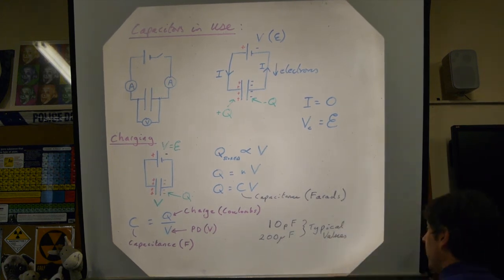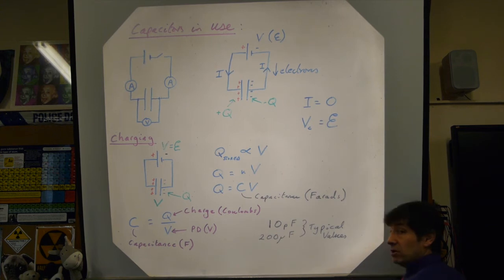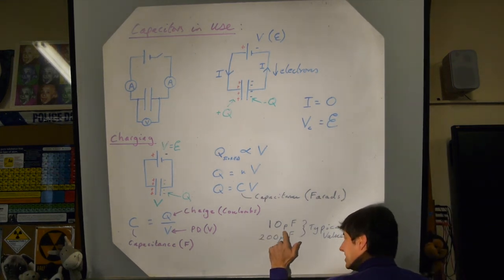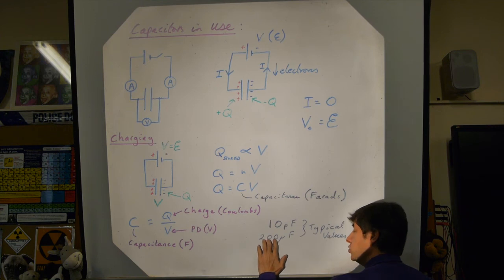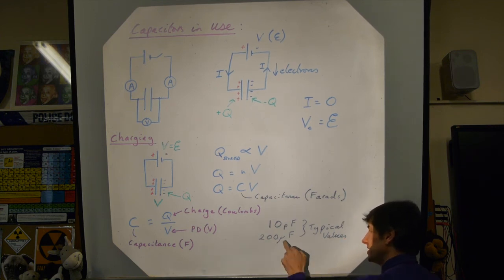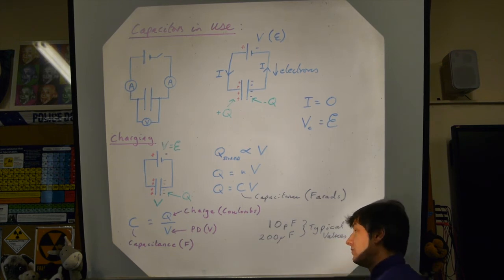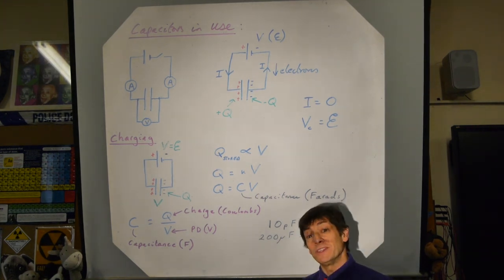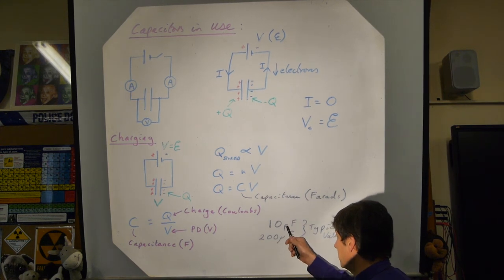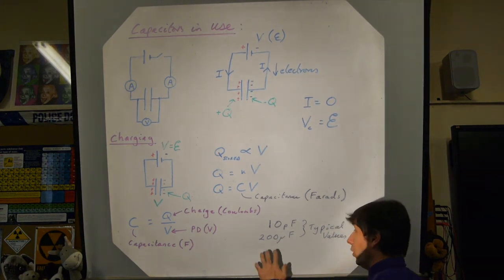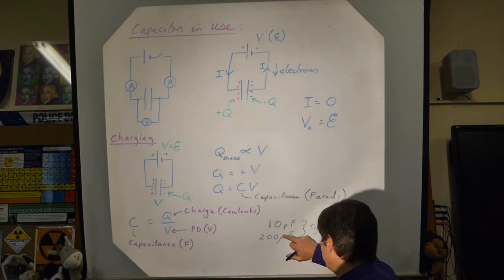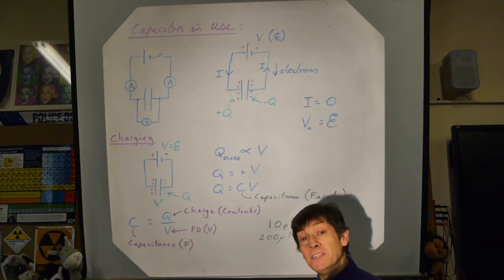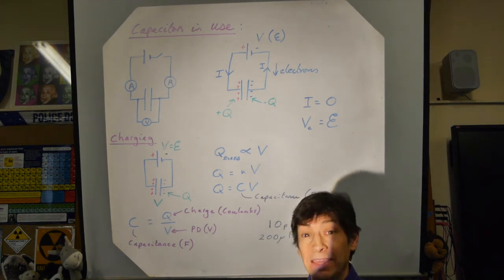Capacitors in the lab store only tiny amounts of charge per volt. A 200 microfarad electrolytic capacitor stores only 200×10⁻⁶ coulombs for every volt — a lot of electrons but not very much charge. Don't mistake these values: this is not 10 farads or 200 farads. These will always have very small multiplier prefixes, which you must account for in calculations.